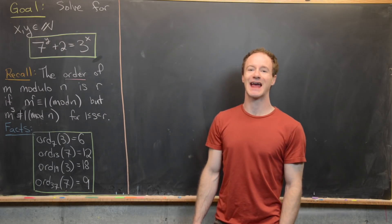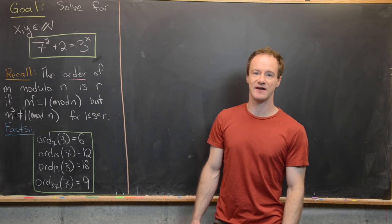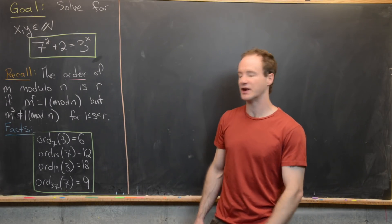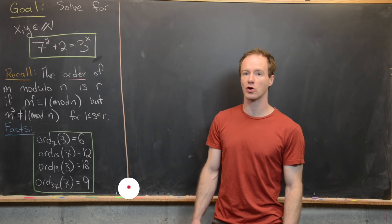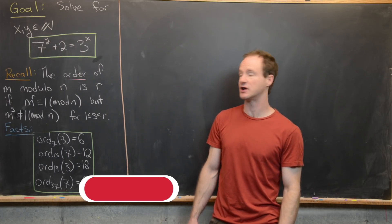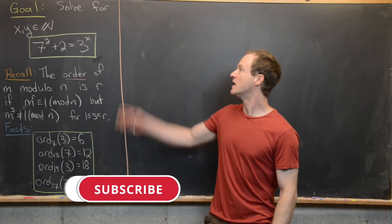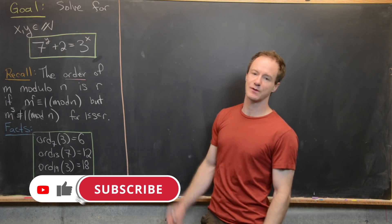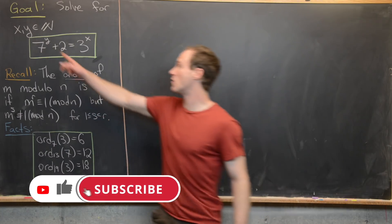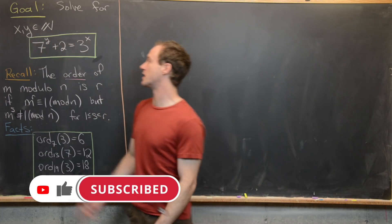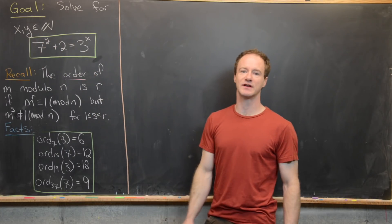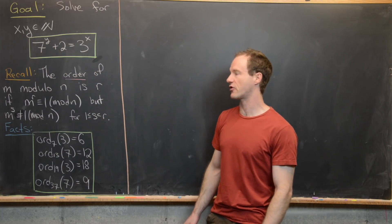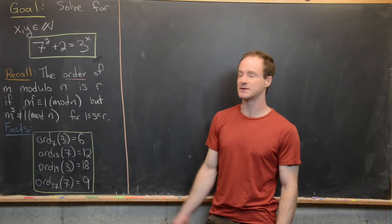Here we're going to solve an interesting exponential Diophantine equation using the notion of the order of an integer modulo n. The equation we want to solve over all natural numbers is 7 to the y plus 2 equals 3 to the x.